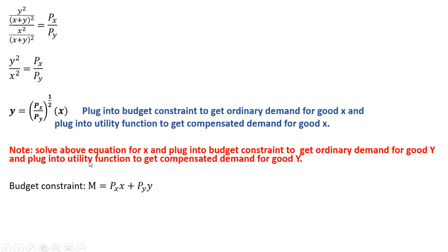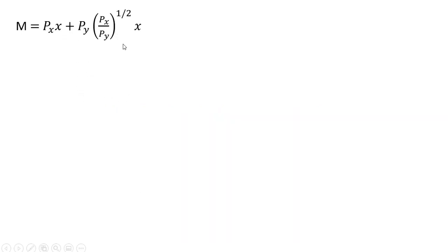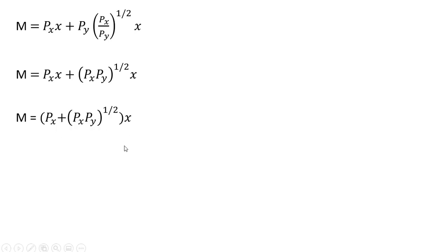Here's our budget constraint. We take the equation from the utility maximizing condition and substitute it in for Y. Solving for X: the PY divided by PY to the one-half just leaves PY to the one-half power. We factor out X on the right-hand side and divide through by what's in parentheses. That gives us our Marshallian ordinary demand for good X.